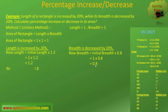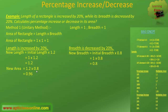One must remember the corresponding multiplying factor for percentage increase and decrease — we have already discussed this in our previous class. So, after the increase in the length and decrease in the breadth, the new area will be 1.2 into 0.8, which is equal to 0.96, as the new length is 1.2 and the new breadth is 0.8. Now, the difference between the initial area and the new area is 1 minus 0.96, which equals 0.04.